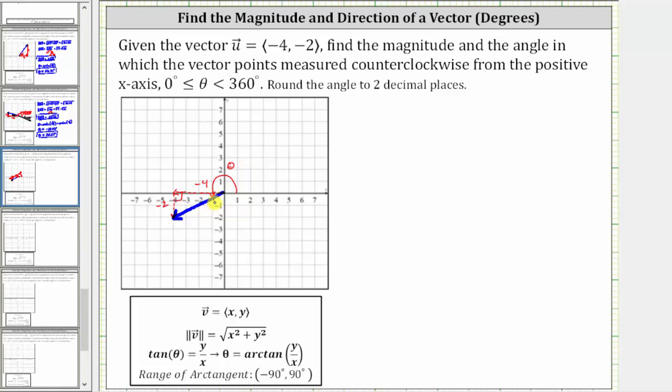To find the magnitude, notice how this is the hypotenuse of the right triangle, which we normally label c. But since c is the magnitude of the vector, we can say the magnitude equals the square root of the quantity x squared plus y squared.